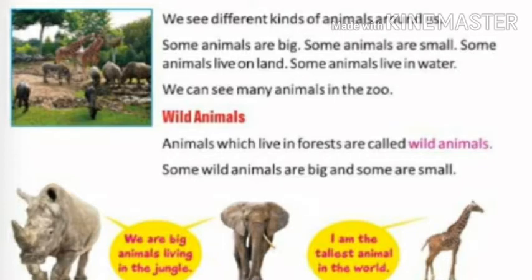We can see many animals in the zoo. We have all been to the zoo, isn't it? So we see many animals there. Now, wild animals — the first point. Animals which live in the forest are called wild animals. Some wild animals are big and some are small.